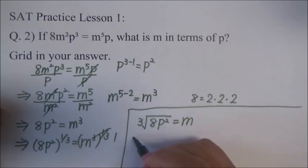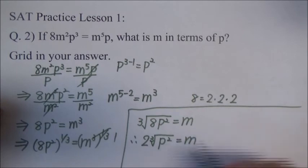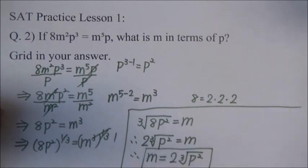So, we can rewrite. This is going to be 2 cube root P squared is equal to M. So, I'm going to rewrite this one here. M is equal to 2 times cube root P squared. This is done. This is the answer.